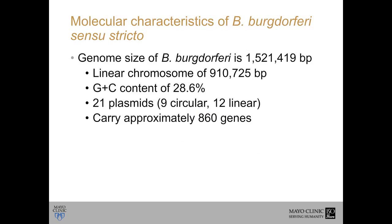Because this is a talk about molecular diagnostics, I want to give a little basic background about Borrelia burgdorferi. Its genome size is about 1,500,000 base pairs. It has a linear chromosome and plasmids. The linear chromosome has a GC content of 28.6%, and it has 21 plasmids, of which 9 are circular and 12 are linear. Combined, the linear chromosome and plasmids carry about 860 genes.